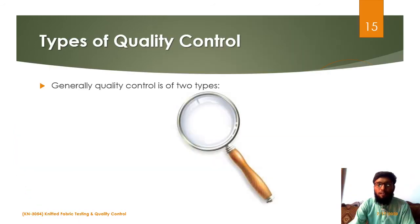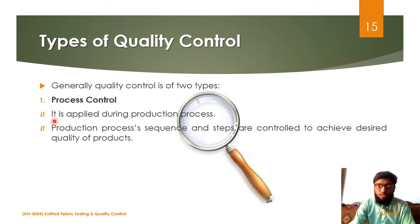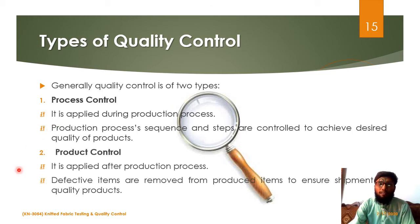Types of quality control: quality control is of two types. The first is process control, which is applied during the production process. During production, samples are picked randomly and their quality is tested to check whether the production is running at the required quality level. The second is product control, which is applied after the production process. Before shipment, the bulk materials are checked and defective items are removed before sending them to the customer.